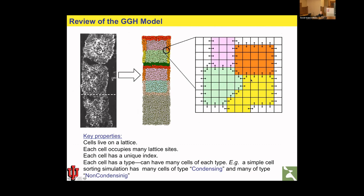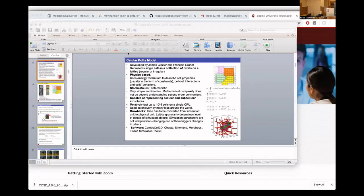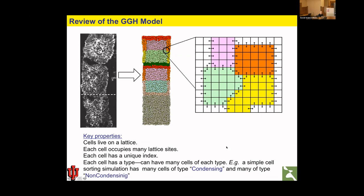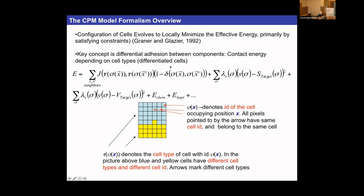Just as we have contact energy, we also can have surface energy, surface constraint, volume constraint, or pseudo-energy terms like chemotaxis or haptotaxis. So far in our simulations we've seen contact energy and volume energy — the volume energy is essentially a quadratic constraint on cell volume, measured in number of voxels, where each voxel is constrained to have volume one.